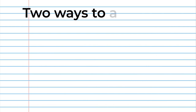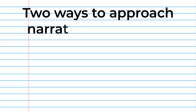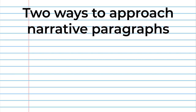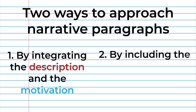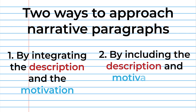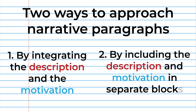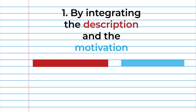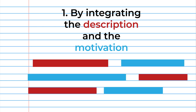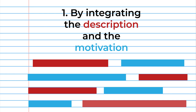There are two ways you can approach including these two things in your paragraphs: by integrating the description and the motivation, or by including the description and motivation in separate blocks. Integrating the description of the events with the person's motivations in the same paragraph is more seamless, but might be more confusing with complicated events.